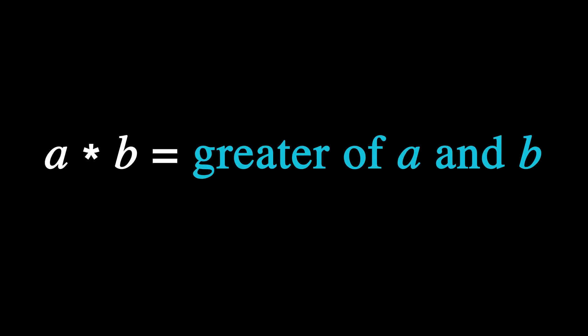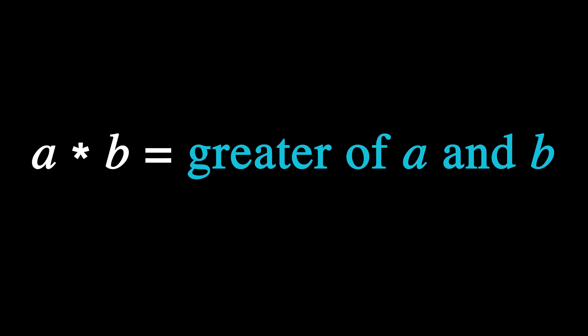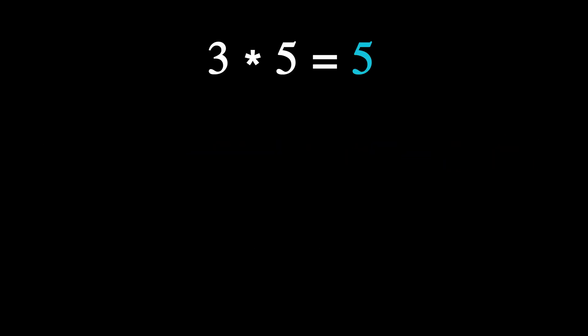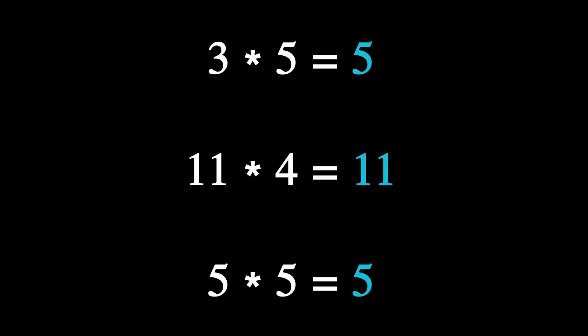Or we can give the binary operation asterisk a custom meaning. For example, let a asterisk b mean the greater value between a and b, or the value that is common if a equals b. For example, 3 asterisk 5 equals 5 because 5 is greater than 3; 11 asterisk 4 equals 11 because 11 is greater than 4; and 5 asterisk 5 equals 5 because a equals b. So long as the operation is binary — performed on two elements and is closed — the binary operation can be anything.